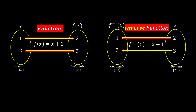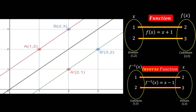The equation changes to x minus 1. If we put in 2 minus 1 we get 1 — correct. If we put in 3 minus 1 we get 2 — also correct. If we place the original function and the inverse function on a graph, we can see both plotted — this is the original function, and this is the inverse function.